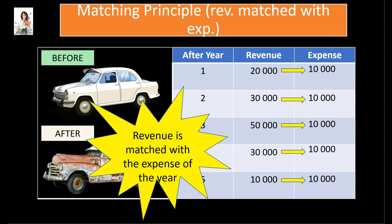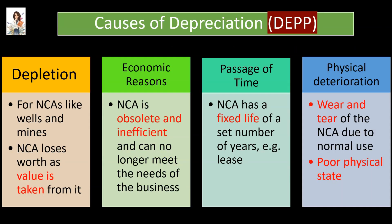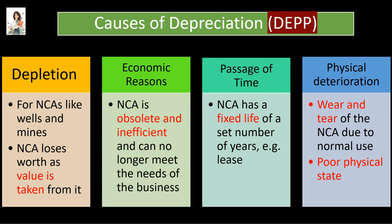What is the reason for this loss in value? The reasons can be recalled using the term DEP, which stands for Depletion, Economic Reasons, Passage of Time, and Physical Deterioration. The first cause is Depletion — if the non-current asset is land used for mining or quarrying, it will lose value as more water is drawn or more minerals are excavated. Economic reasons are when equipment like computers can rapidly become out of date and therefore lose the ability to meet the needs of the business. The life of certain assets, such as a lease, has legal limits, so if a business takes premises on long-term rent or lease, the lease will likely lose value as time goes by. The last and most probable cause is physical deterioration or wear and tear of the asset.